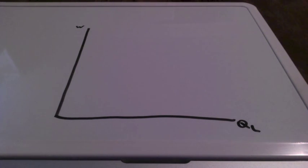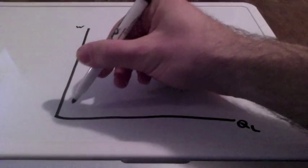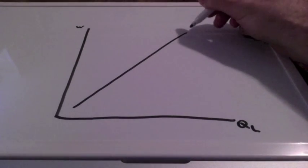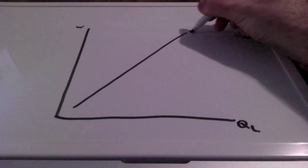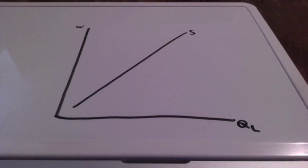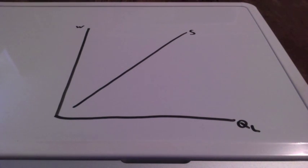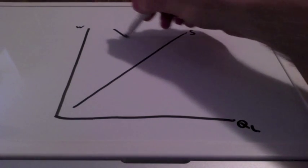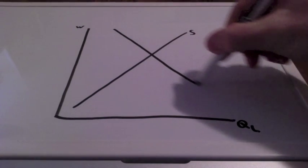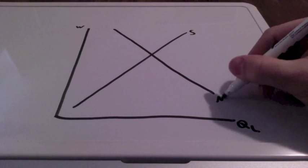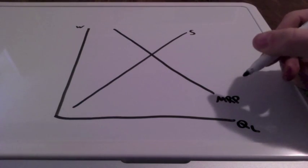The first curve we're going to look at for the monopsony is the supply curve. The supply curve is upward sloping because the monopsony is a price maker with extensive control. The curve, therefore, is upward sloping.